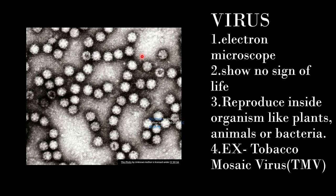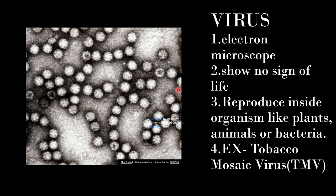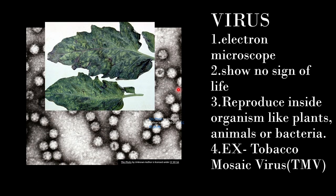Next is the virus. Viruses are not included in the category of microorganisms because they show no signs of life outside a host body. When they enter the body of a host — plants, animals, or bacteria — they reproduce. They are so small that an electron microscope is needed to see them. An example is the Tobacco Mosaic Virus (TMV).